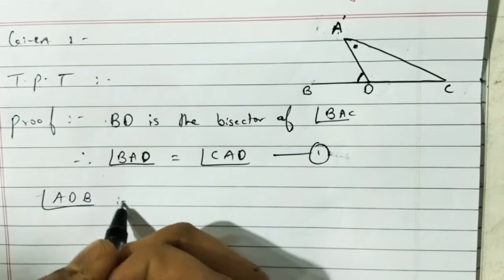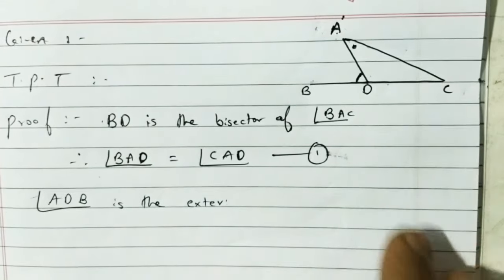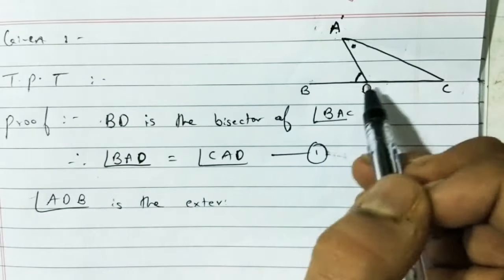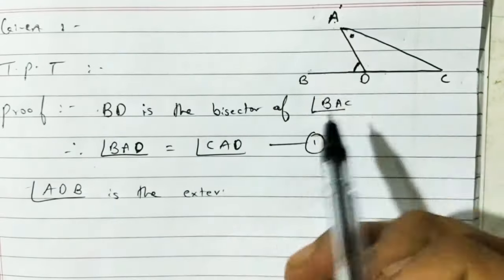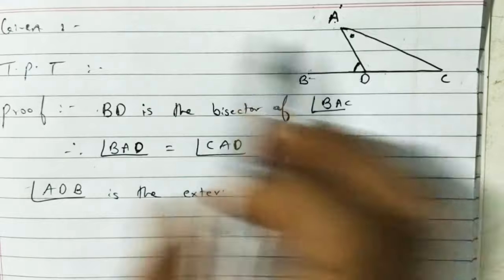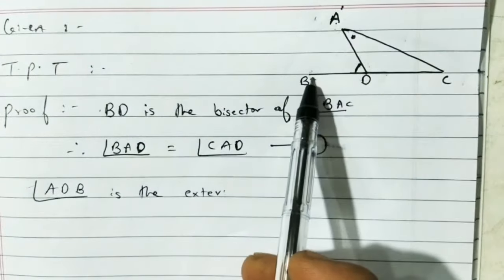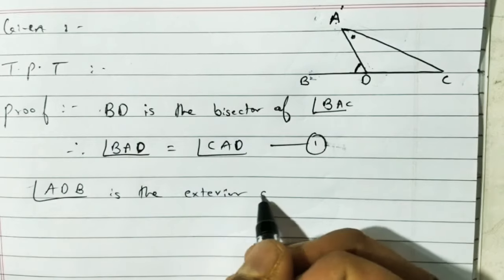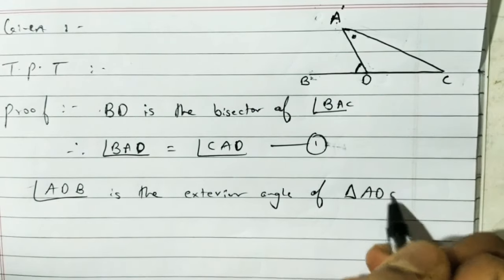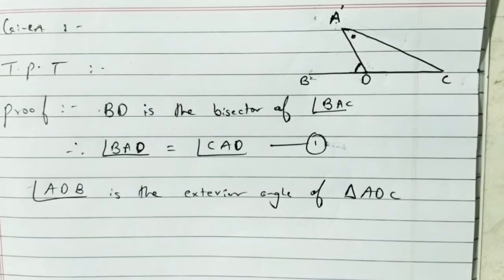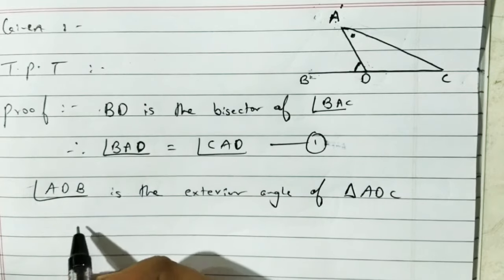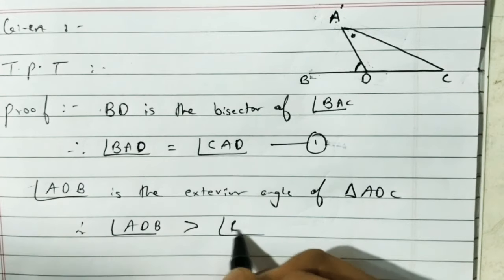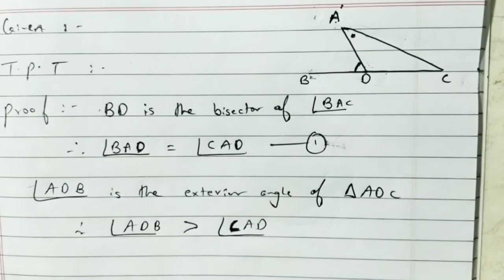Angle ADB is the exterior angle of triangle ADC. I've drawn the figure with AB not yet joined to avoid confusion. Angle ADB, as the exterior angle of triangle ADC, is always greater than the remote interior angles. So we write this in the next step.